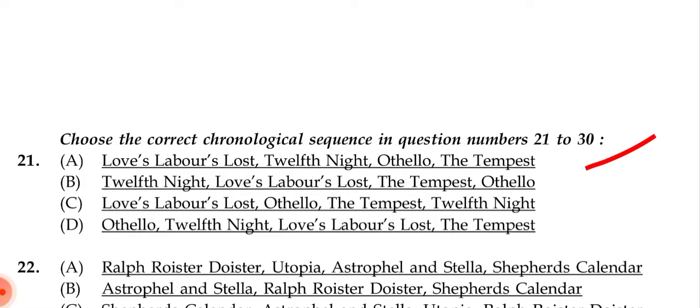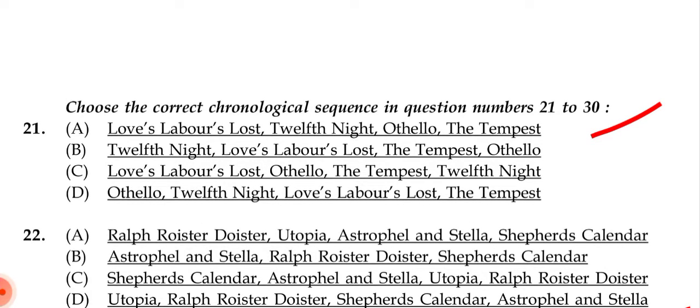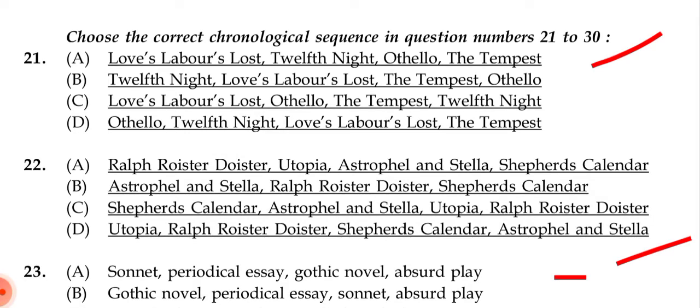Questions 21 to 30 ask us to choose the correct chronological sequence. For question 21, we must reorder Shakespeare's plays by publication year. The correct answer is (a): Love's Labour's Lost, then Twelfth Night, then Othello, then The Tempest.